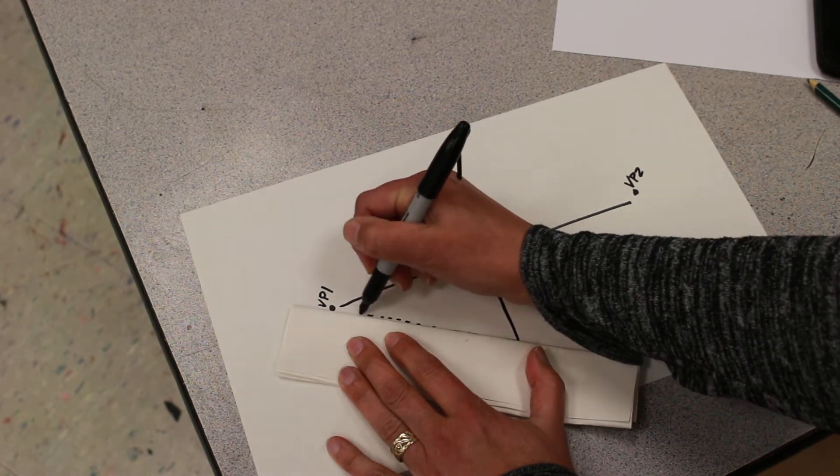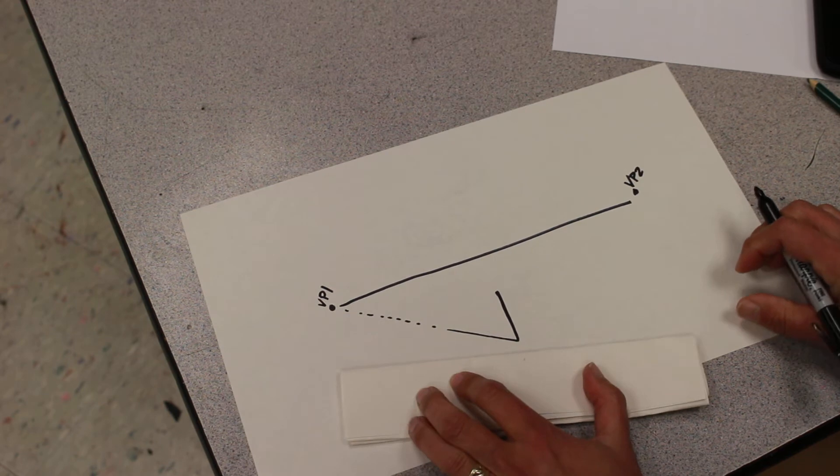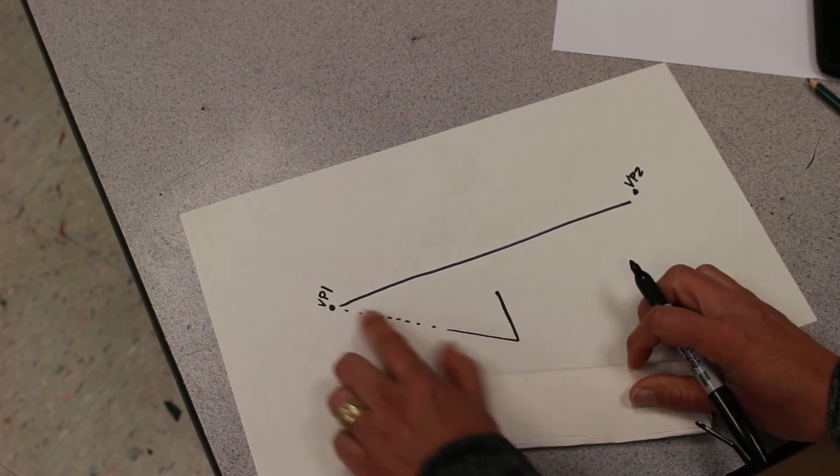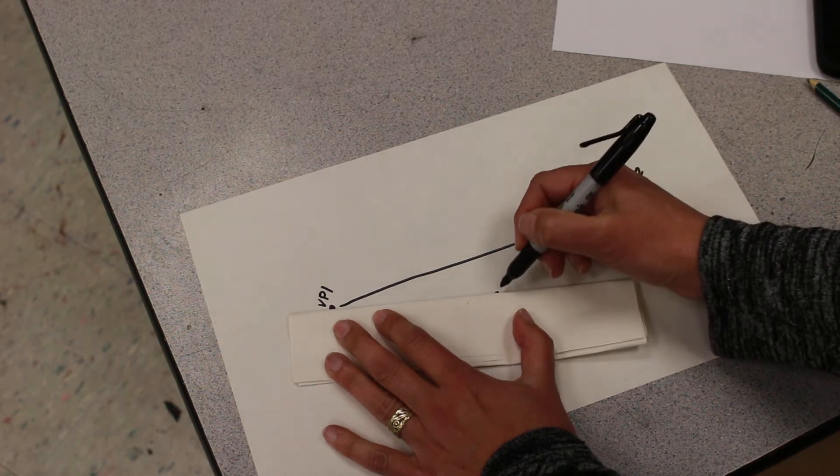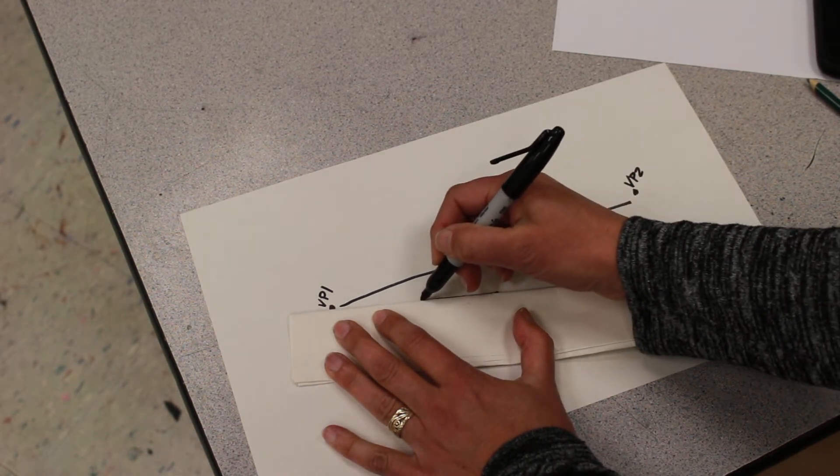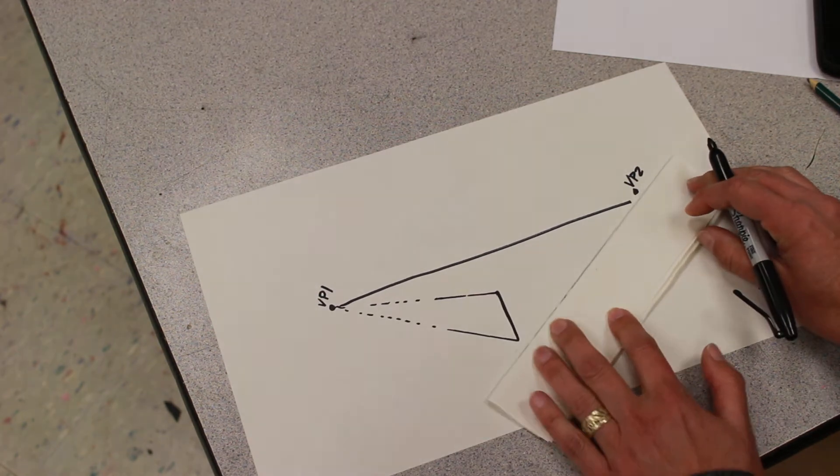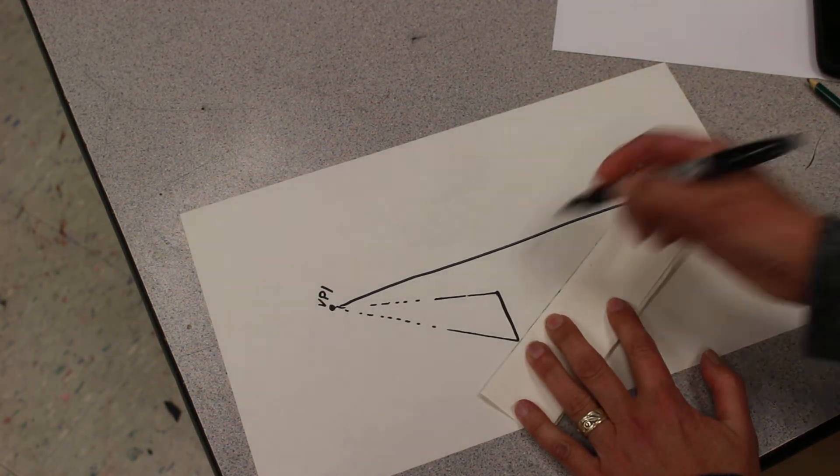I'm going to make it dotted at the end because I'm using a sharpie. So if this line were to go all the way to the vanishing point, it would touch it. So I'm going to do that on the top and bottom to each vanishing point.